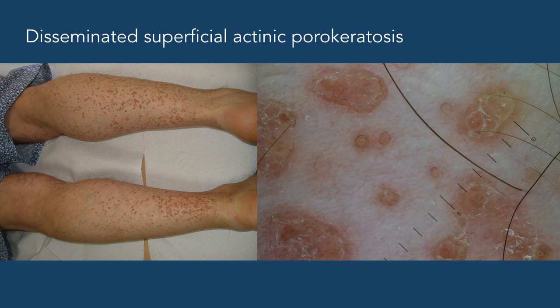DSAP may be exacerbated by UV exposure or phototherapy and can also be seen in immunosuppressed individuals. In this case, we can see the typical keratin rims in the dermoscopic image to the right. We can also see scales in the central atrophic areas, small areas of hyperpigmentation, and diffusely distributed dotted vessels.